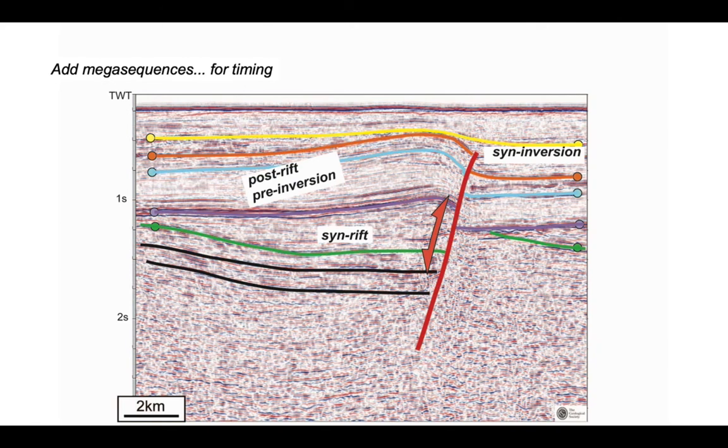However, it's a post-rift sequence with respect to the intervals that lie deeper. And you can see that the package between the mauve and the green horizon thickens towards the fault. It's a syn-rift package of rocks.